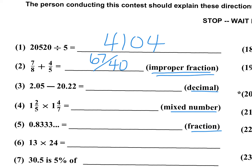Number three: 2.05 minus 20.22. The answer is going to be negative. I'll take 22 minus 05, that's 0.17. And then 20 minus 2 is 18. So the answer is negative 18.17.